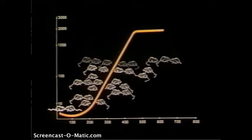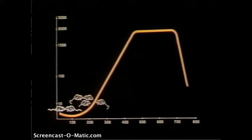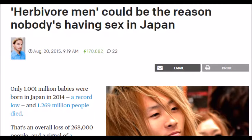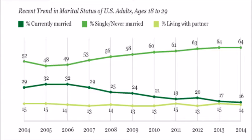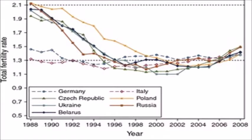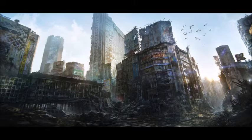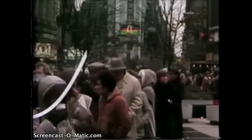During this period females ceased to reproduce. Their male counterparts withdrew completely, never engaging in courtship or fighting. They ate, drank, slept, and groomed themselves — all solitary pursuits. Sleek, healthy coats and an absence of scars characterized these males; they were dubbed "the beautiful ones." Breeding never resumed and behavior patterns were permanently changed. The conclusions drawn were that when all available space is taken and all social roles filled, competition and stress will result in a total breakdown in complex social behaviors, ultimately resulting in the demise of the population. Calhoun saw the fate of the mice as a metaphor for the potential fate of man, characterizing the social breakdown as a "second death."